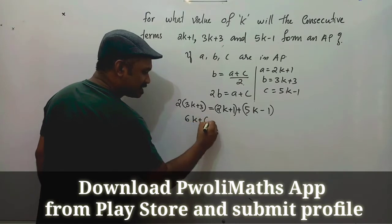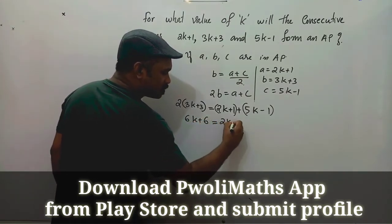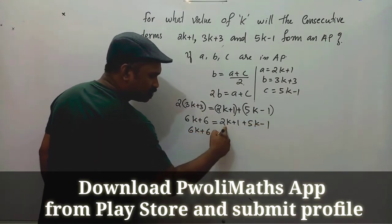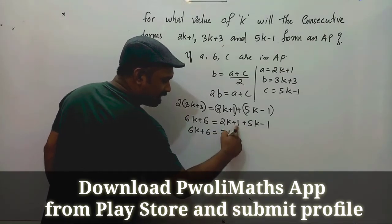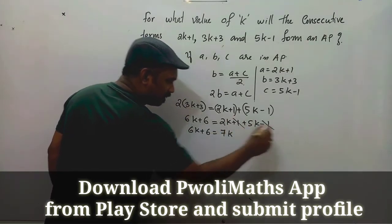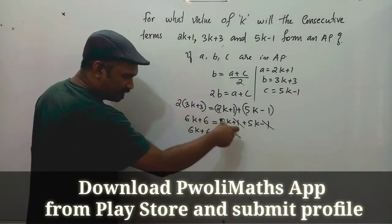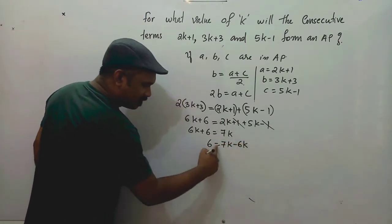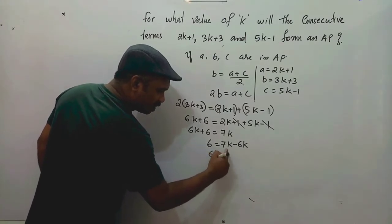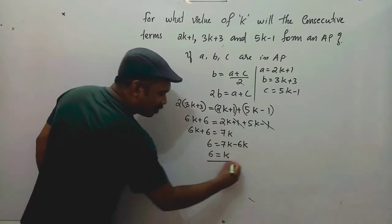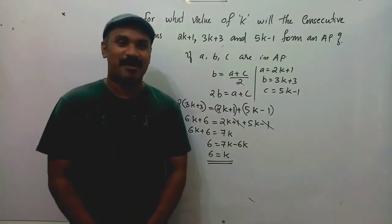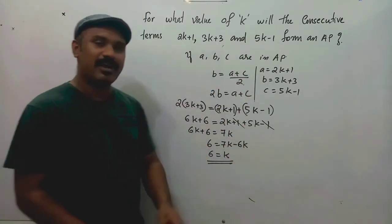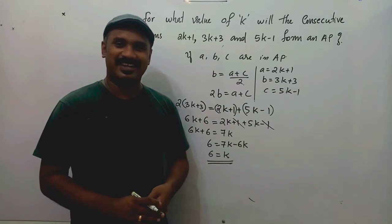So 2 times (3k plus 3) equals (2k plus 1) plus (5k minus 1). That gives 6k plus 6 equals 7k plus 1 minus 1. The plus 1 and minus 1 cancel, so 6k plus 6 equals 7k. Therefore 6 equals 7k minus 6k, which means k equals 6.